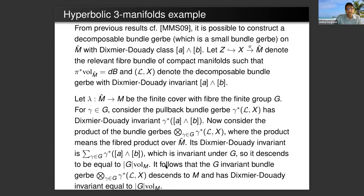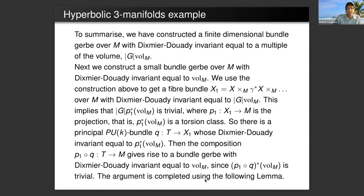It has Dixmier-Douady invariant γ^* A wedge B. Consider the product of the bundle gerbes pullback under the various elements in the group G. There's a fiber product over M-hat. This is the product of bundle gerbes. Its Dixmier-Douady invariant is the sum of these elements which is invariant under G, so it descends to be the number of elements in G times the volume of M.